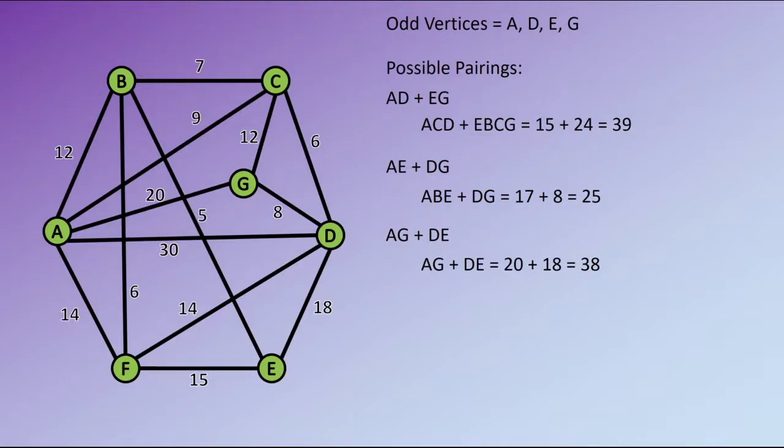We have our three possible totals for the different pairings and we look to find which one is the shortest. The shortest route pairing is AE and DG with a total of 25. This means that we need to add additional edges into our graph that replicate those shortest routes.